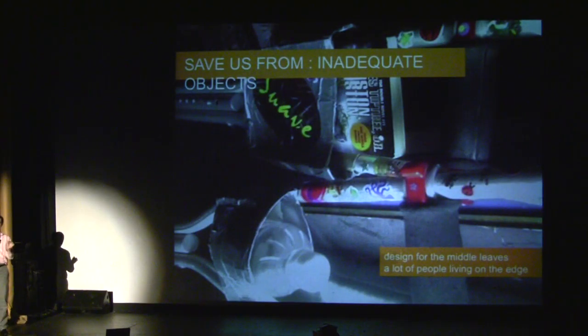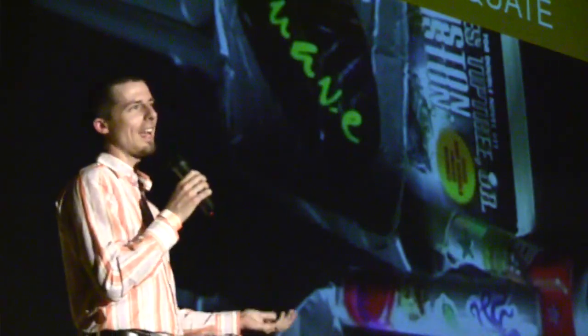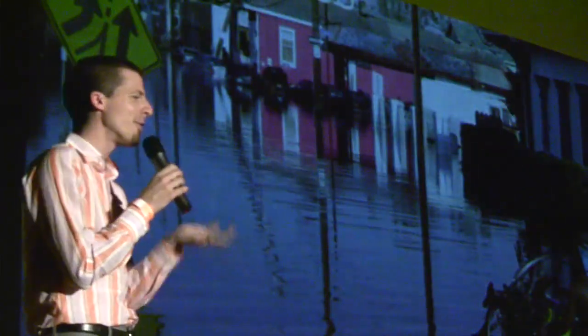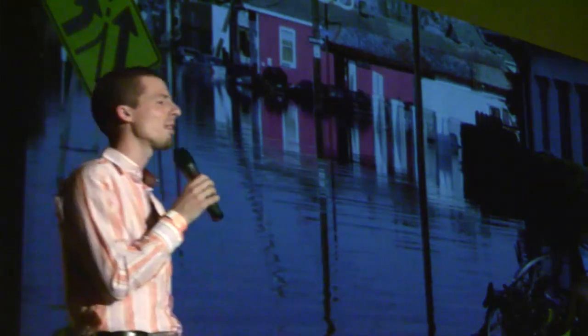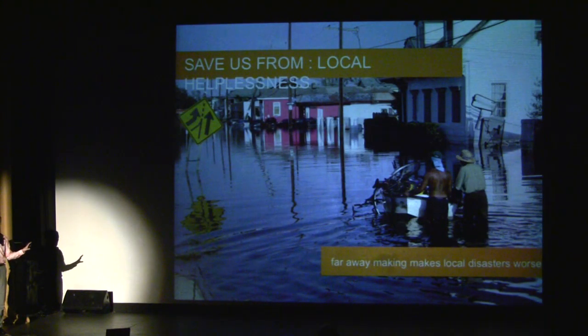We design inadequate things all the time, and we do it because we design for the average person. This person decided they had to add little pockets to their crutches, but they had to do it with duct tape. If we could enable that user — if we could enable these users in the aftermath of Katrina — if they could make the things they need to sustain themselves and fix the things that are broken in their environment, think of all the problems we could solve.